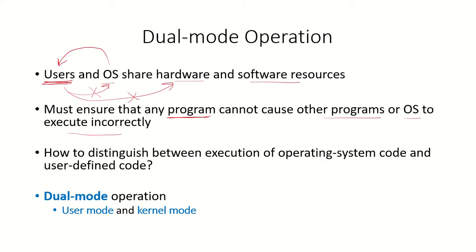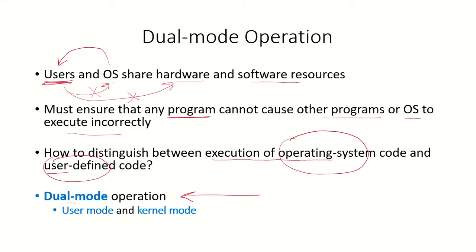How can the system distinguish between the execution of the OS and the user? How does the system know whether OS code is running or user-defined code is running? For this, there is the facility of dual mode operation. The system works in two modes: either the system will be in user mode or it will be in kernel mode.